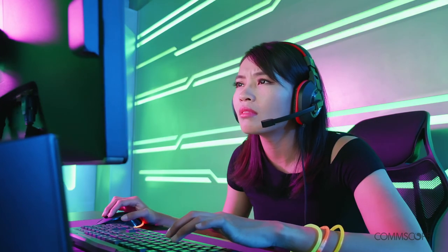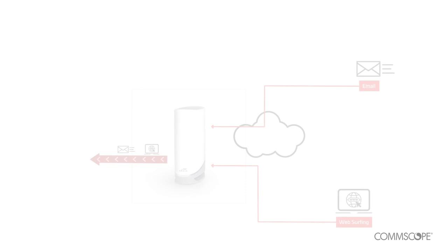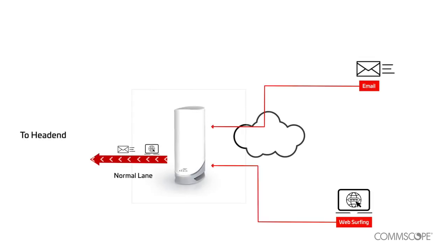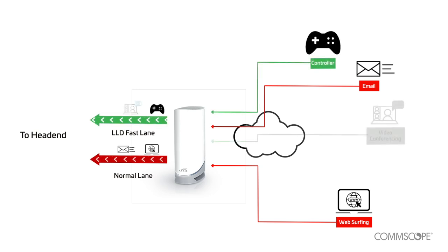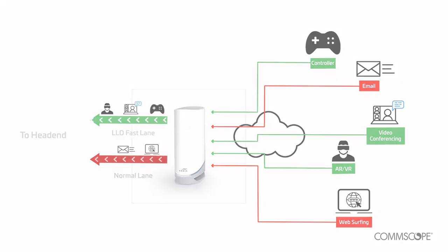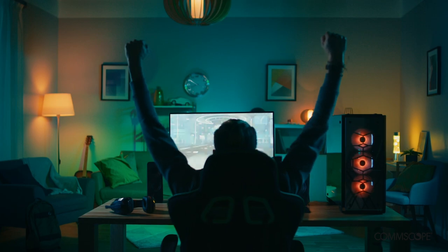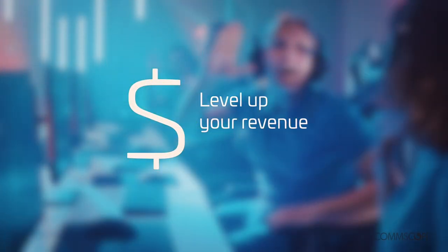Latency and jitter create lag and inconsistent response times for gaming and other applications. Enter Low Latency DOCSIS, or LLD. It creates a dedicated fast lane through the HFC network to carry latency and jitter sensitive applications, reducing the round trip delay to less than 15 milliseconds.